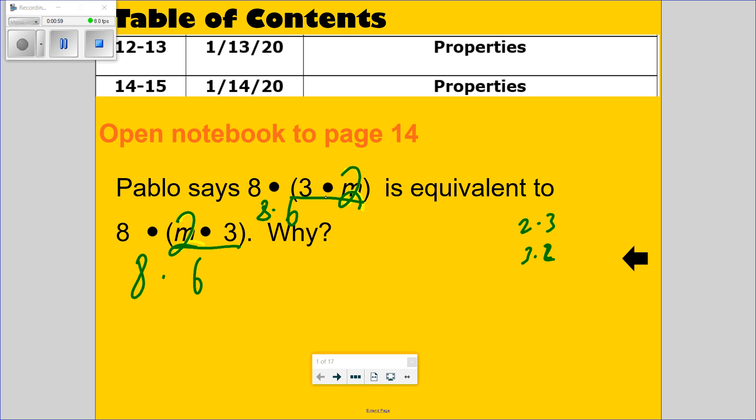So, another way is 3 times m is the same thing as saying 3m. So, it's 8 times 3m. And m times 3 is the same thing as saying 3m. So, that's why they're both equivalent.